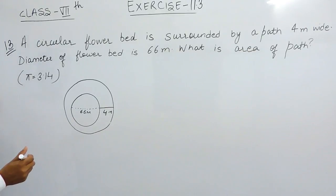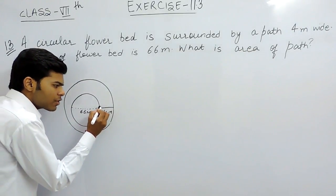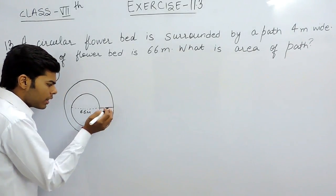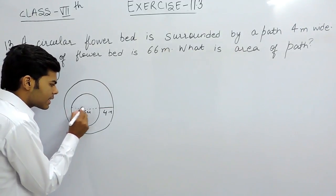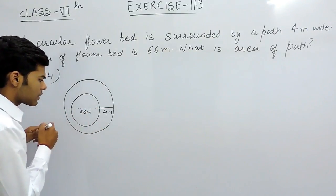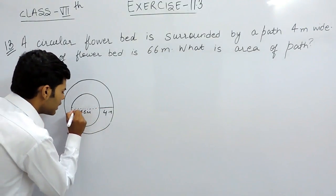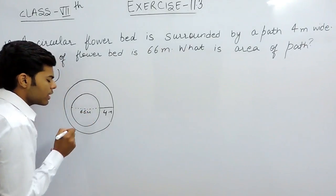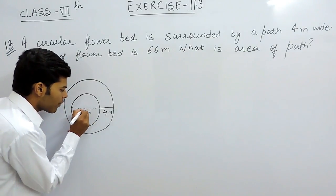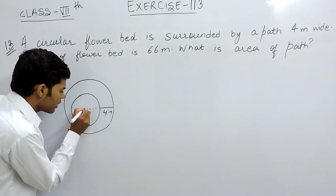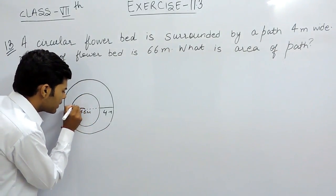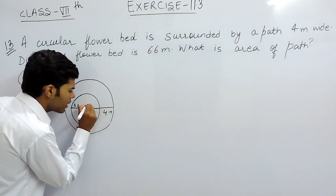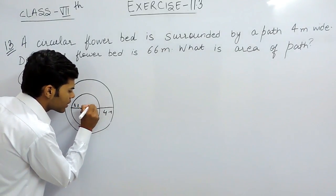How we are going to do this: the path is 4 meters wide and the diameter of the flower bed is 66 meters. So the center of this flower bed has a radius of 33 meters, meaning the radius of the smaller circle is 33 meters.